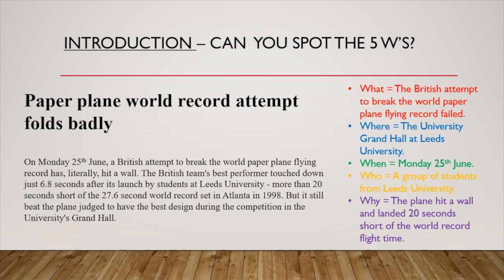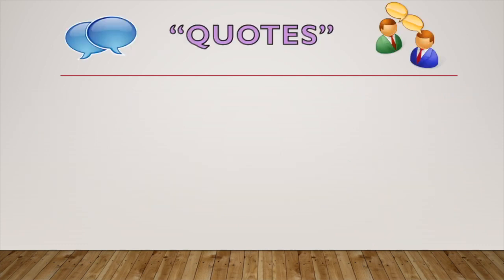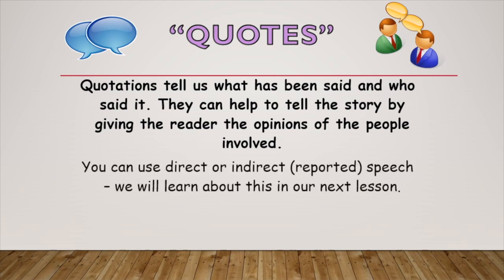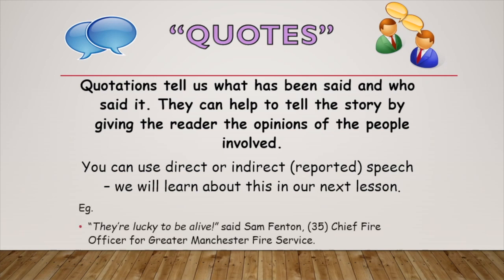Something else that's very common in a newspaper article are quotes. A quotation tells us what has been said and who said it. They can help to tell the story by giving the reader the opinions of the people involved. You can use direct or indirect reported speech, which we will learn about in our next lesson. An example of this is: 'They're lucky to be alive,' said Sam Fenton, 35, Chief Fire Officer for Greater Manchester Fire Service. You can see extra information — the age is in brackets — incorporating a bit of what we've looked at before.